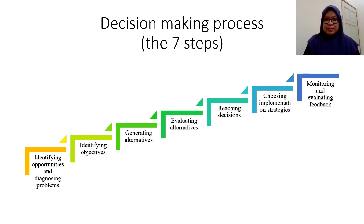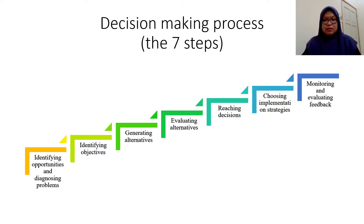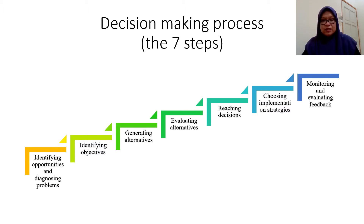As a manager, when they want to make a decision, there are 7 steps that they have to follow. Step 1: identifying opportunities and diagnosing problems. Step 2: identifying objective. Step 3: generating alternatives. Step 4: evaluating alternatives. Step 5: reaching decisions. Step 6: choosing implementation strategies. Step 7: monitoring and evaluating feedback.